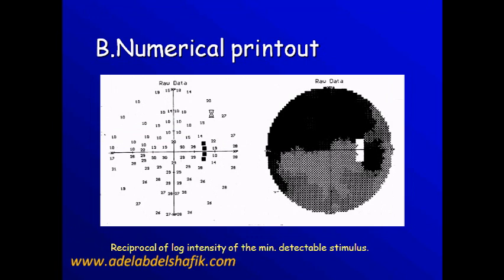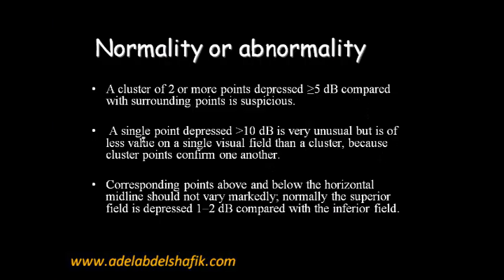The numerical values are numbers written here — this is the sensitivity of each location of the retina. We get useful information from this, which we can discuss later in different subjects.